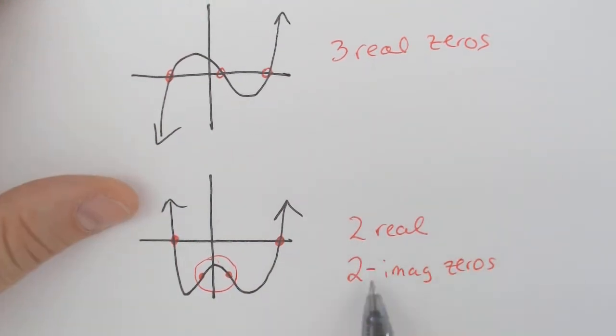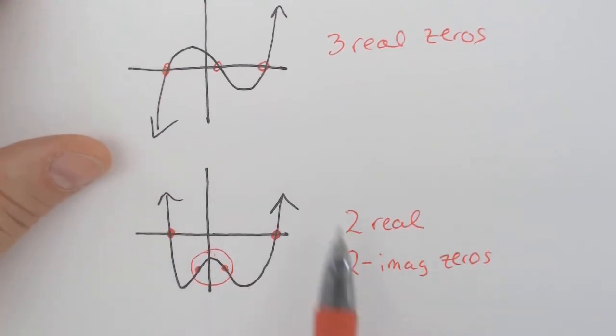And that means that we have two imaginary zeros or complex zeros as well, thus making four, which it looks like it should have had four to begin with.